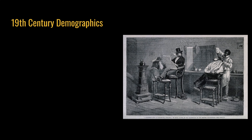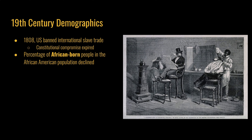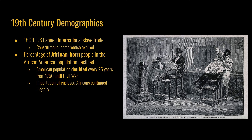Let's start by talking about the demographics of African Americans in the 19th century. By 1808, the United States banned the international slave trade, as had been promised under the constitutional compromise that forbade such a law for 20 years. Southern states had actually imported more enslaved people in that 20-year period than in any other 20-year period of the Atlantic slave trade. After 1808, the percentage of African-born people in the African American population declined, and the African American population became a smaller percentage of the overall population because the rest of the population was doubling every 25 years from 1750 to the Civil War.